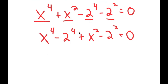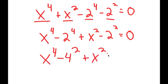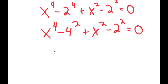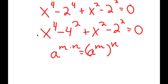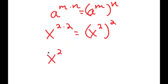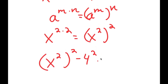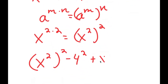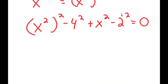Now, 2 to the power of 4 is 16, and 16 is the same thing as 4 squared. So I get x to the power of 4 minus 4 squared, plus x squared minus 2 squared. If I have something in the form a to the power of m times n, this equals a to the power of m to the power of n. So x to the power of 4 is the same as x to the power of 2 to the power of 2. So now I get x squared to the power of 2, minus 4 to the power of 2, plus x squared minus 2 squared is equal to zero.